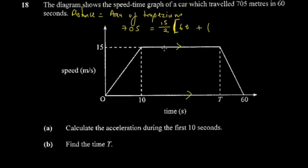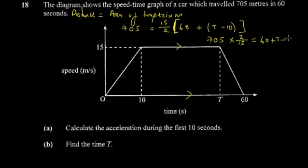The length of the lower parallel side runs from here to here, which equals t minus 10. The other parallel side is 60. So the equation becomes: 705 = (15/2) × (60 + (t − 10)). I'll cross-multiply: 705 × 2/15 = 60 + t − 10. Dividing: 15 into 705 gives 47, since 15 × 4 = 60 with 105 remaining, and 15 × 7 = 105.